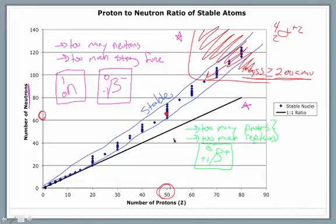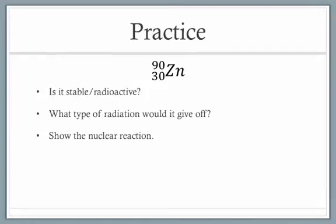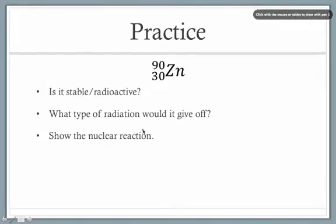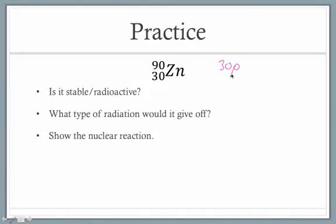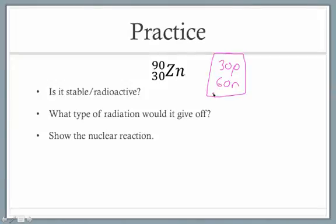There's not too much more to discuss — let's try some problems. Our first practice problem deals with zinc-90. The goal is to identify if it's stable or radioactive, to identify what type of radiation it would give off, and to show the nuclear reaction. We need the number of protons and neutrons. The atomic number gives us 30 protons. The mass of 90 minus 30 protons gives us 60 neutrons. We plot 30 protons on the x-axis and 60 neutrons on the y-axis.